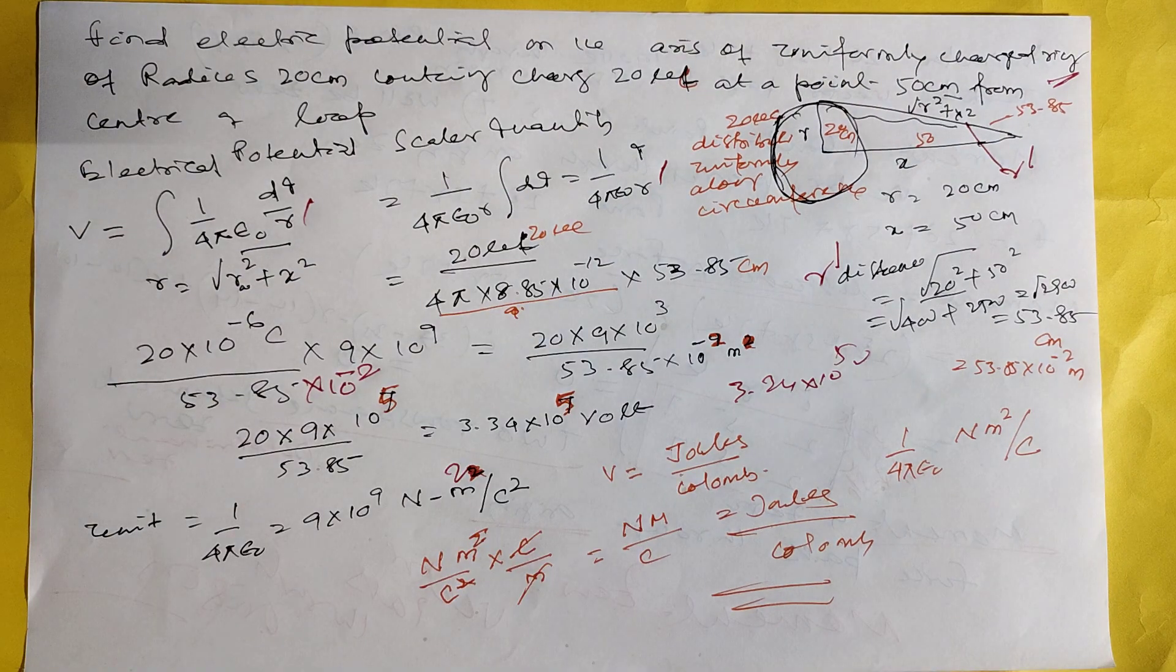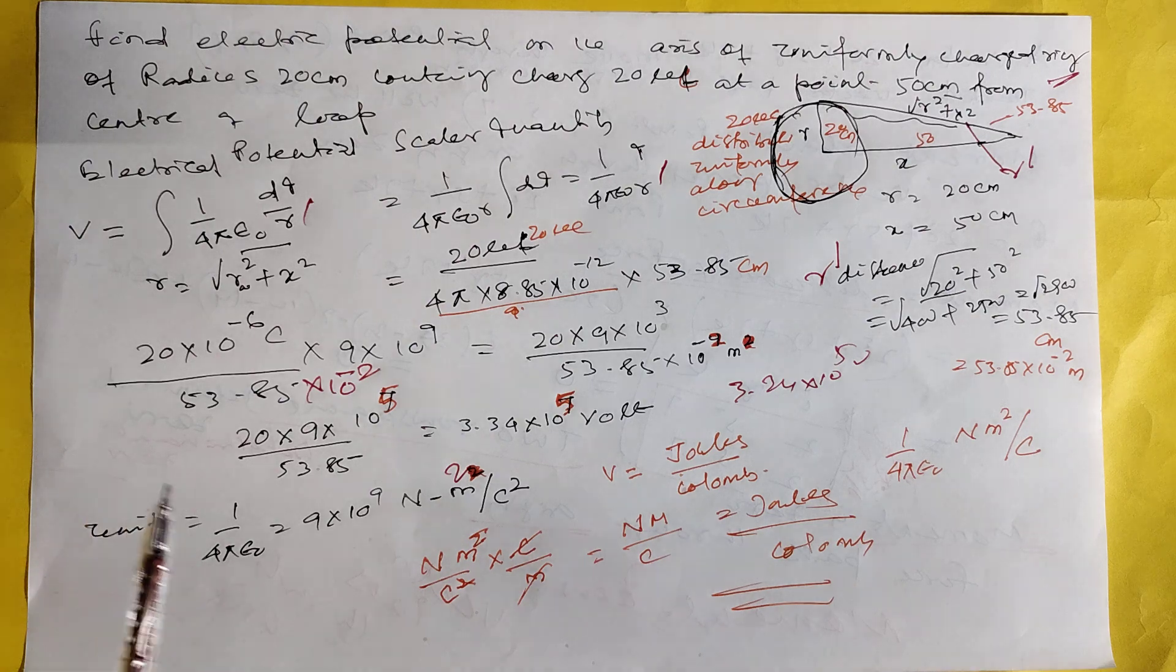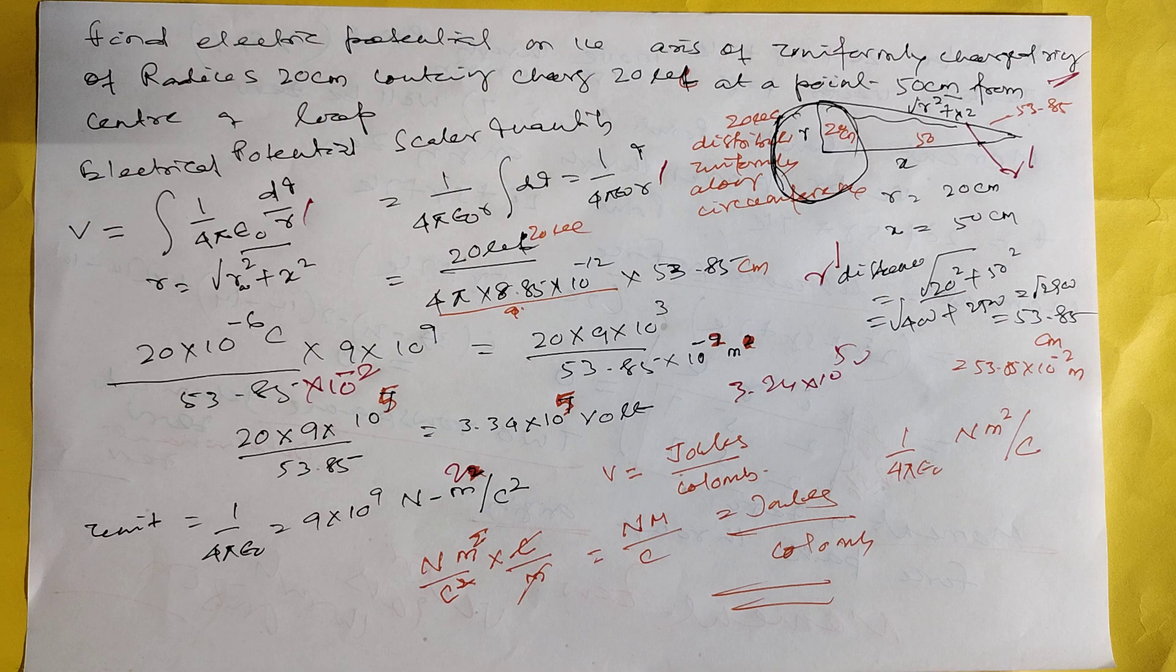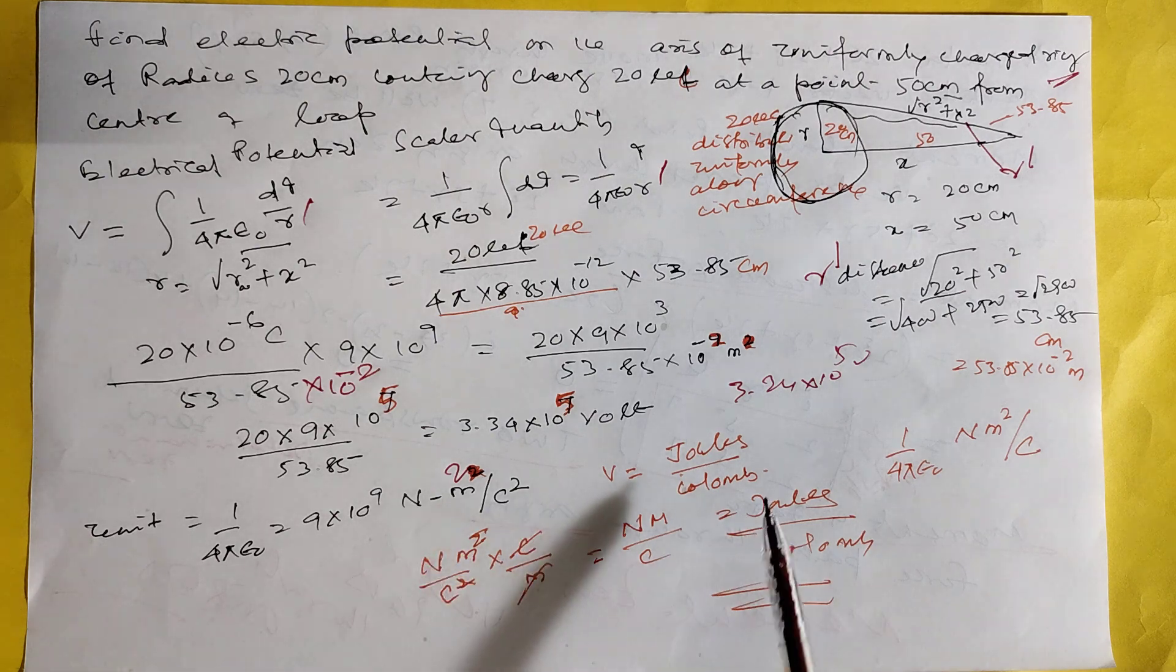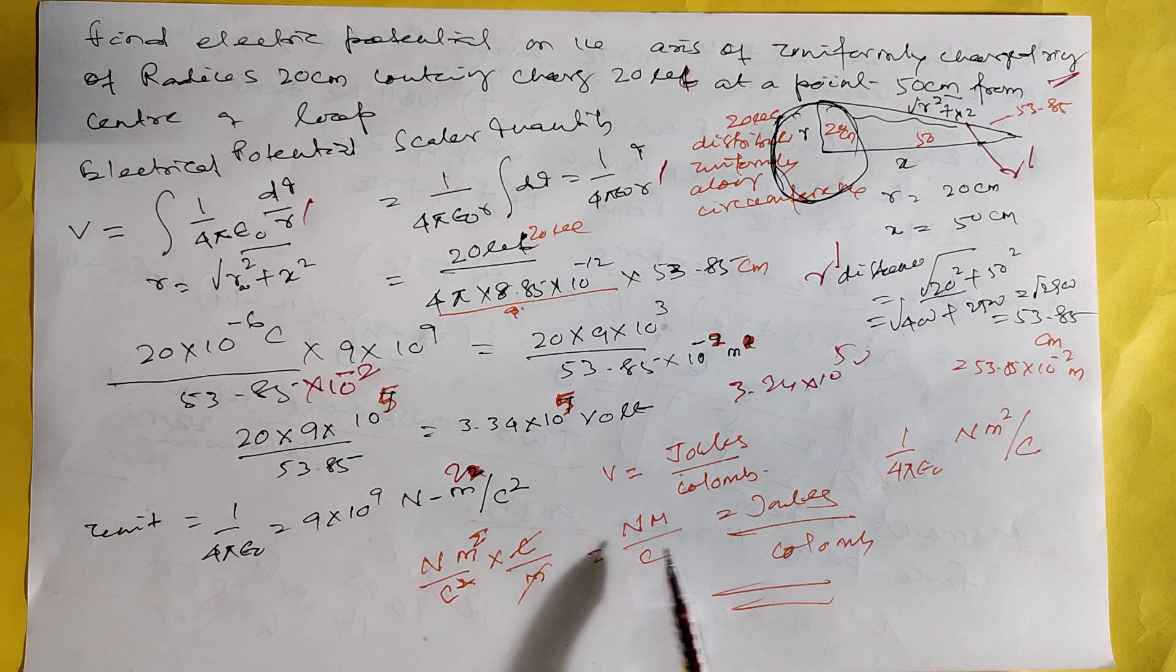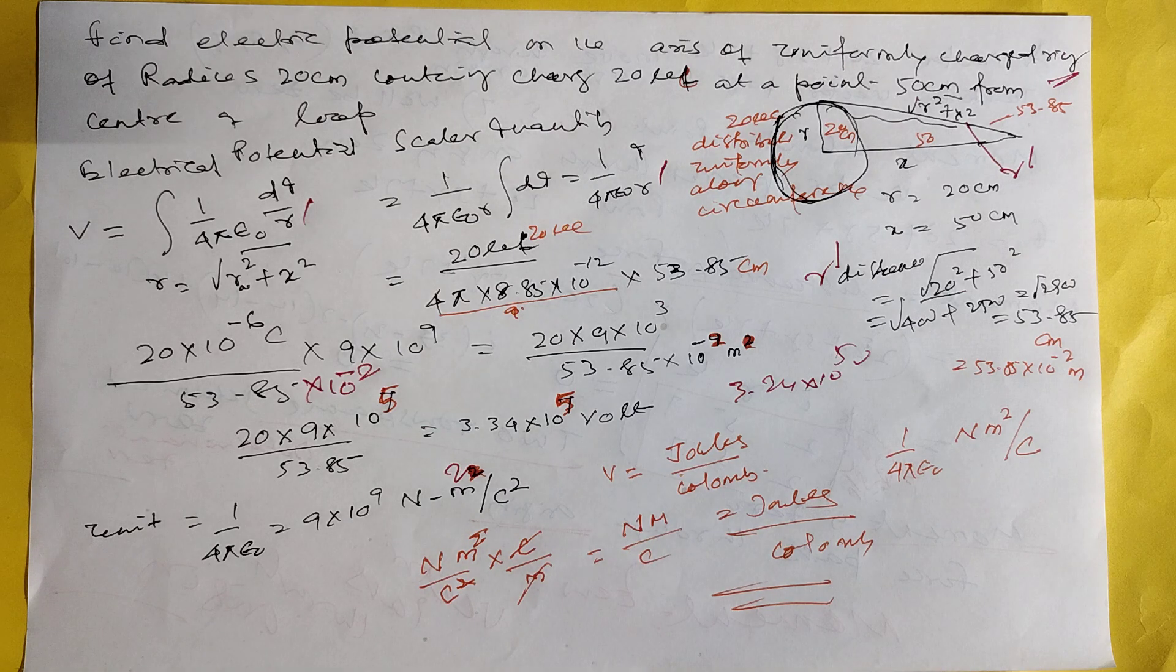And this is the r dash. So the answer is coming like this. The formula 1 by 4 by epsilon 0 is equal to 9 into 10 to minus 9 Newton meter square by coulomb square. And why it is voltage: joules per coulomb, Newton meter by coulomb, that is joules per coulomb.